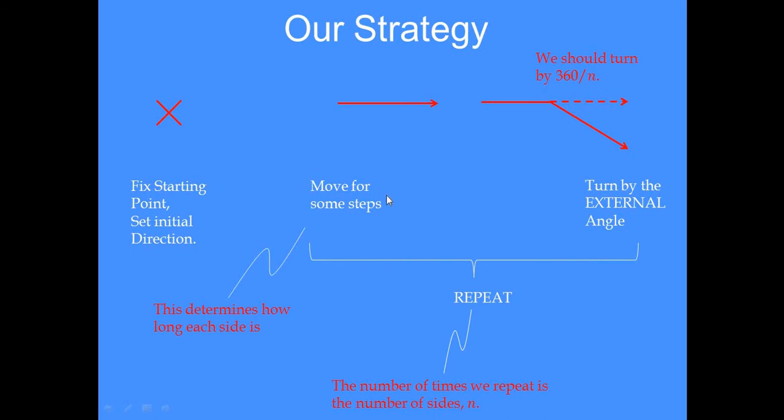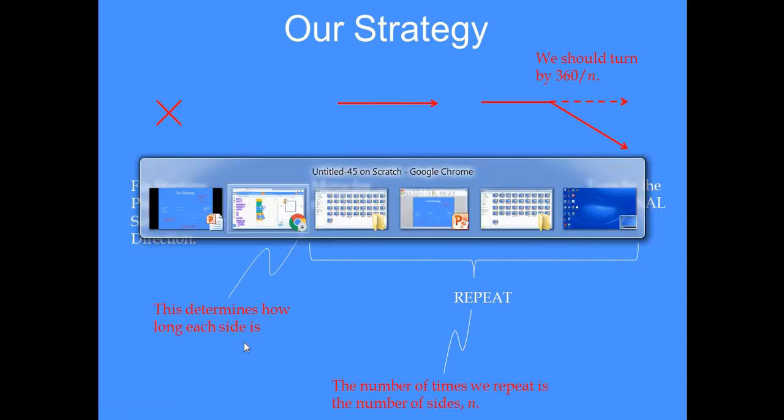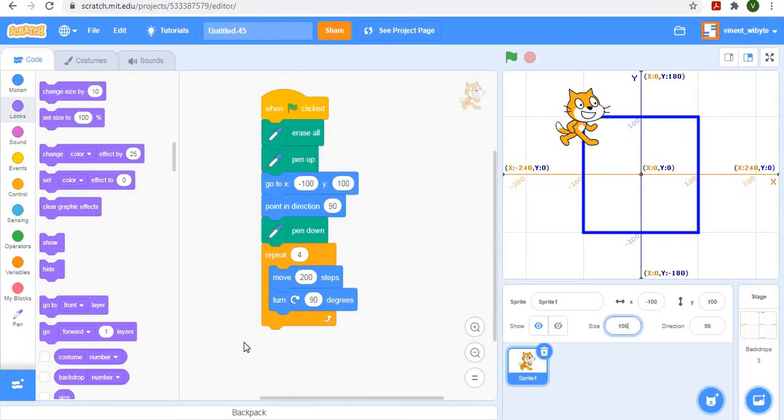So here, like I said, if we make it move for some number of steps that determines how long each side is. So this is the idea we will follow. In fact, this looks a bit complicated but this is exactly what we have done when we do the square. Remember here we are making sprite repeat this four times because four is the number of sides